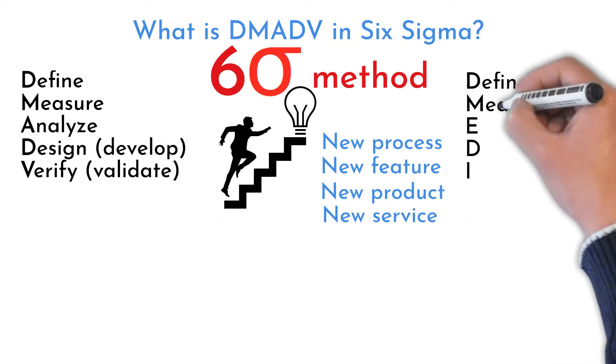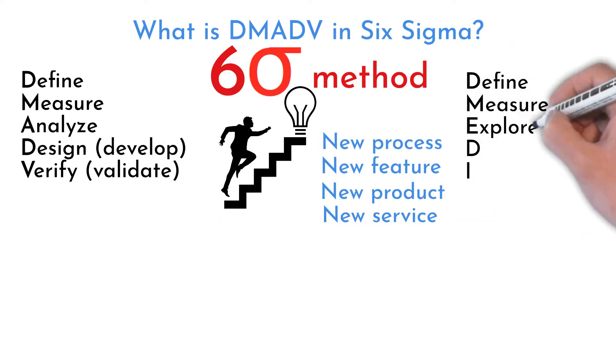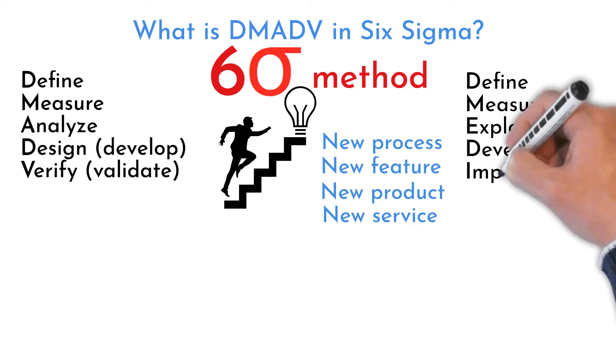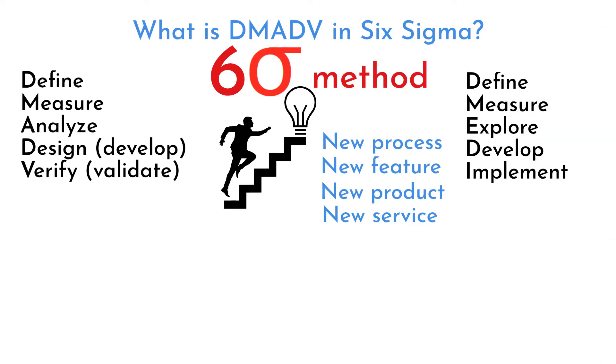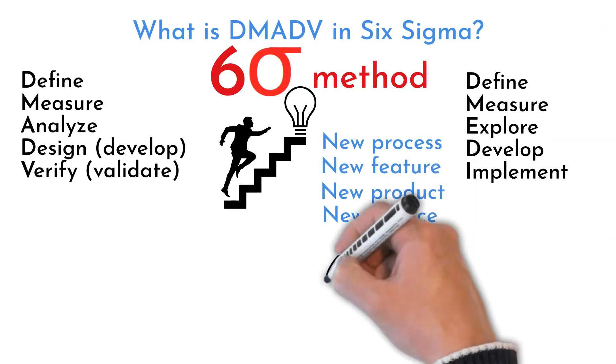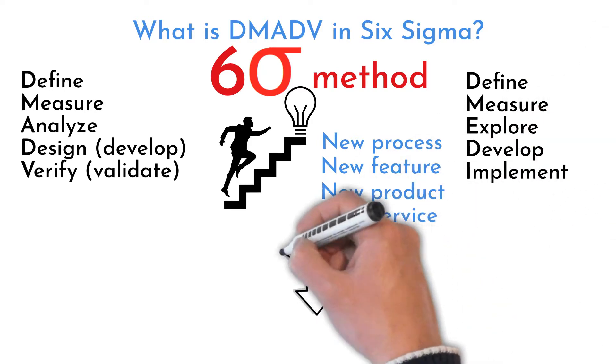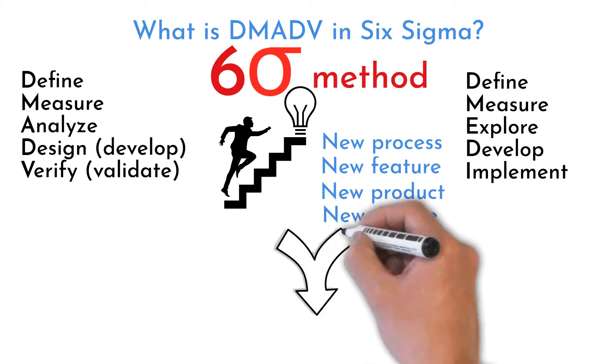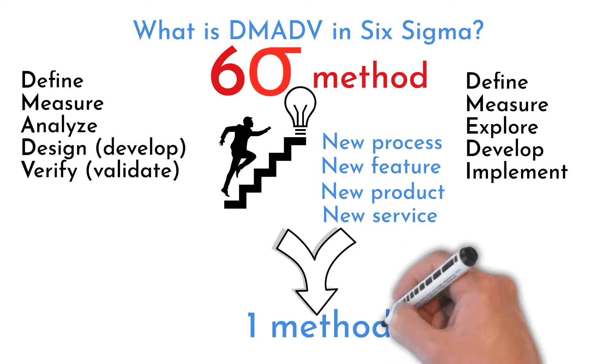DMETI stands for Define, Measure, Explore, Develop, Implement. Five main phases, two different acronyms, but the same method.